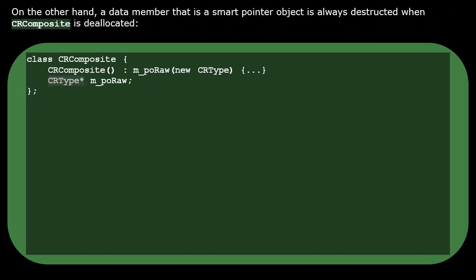On the other hand, a data member that is a smart pointer object is always destructed when the class is deallocated.